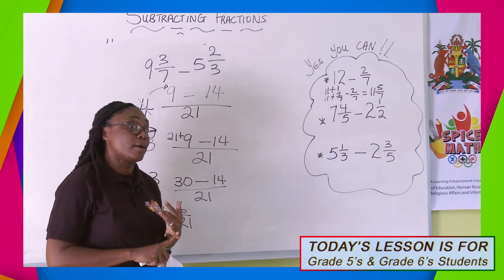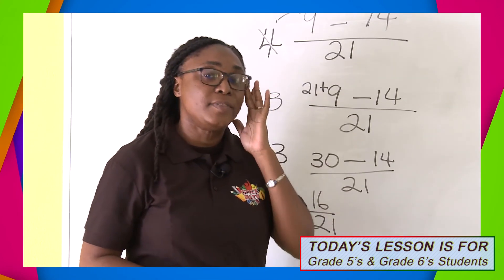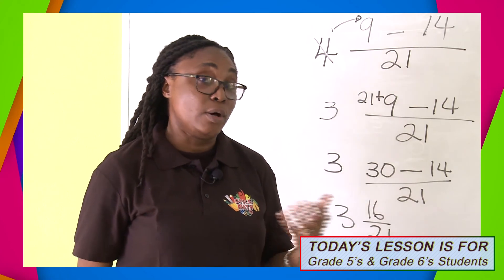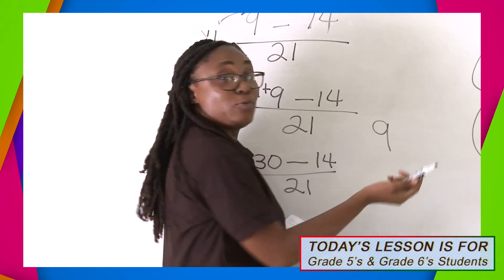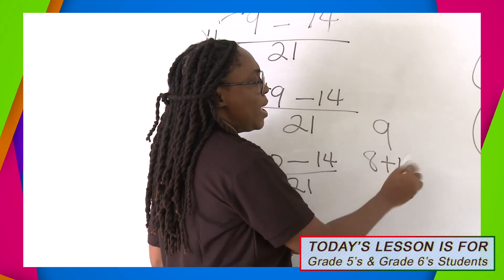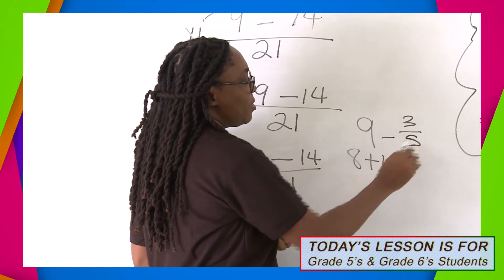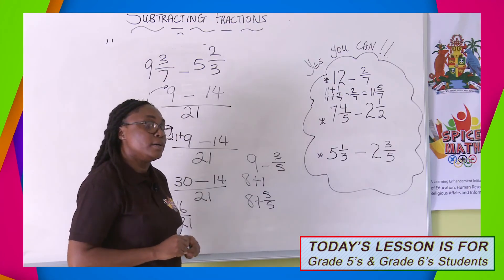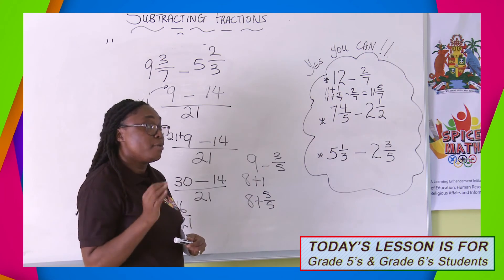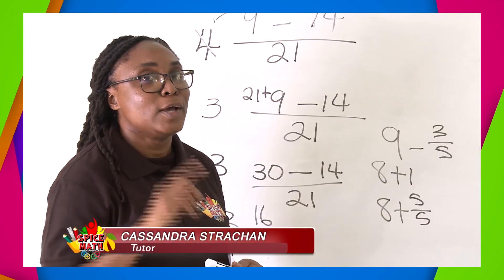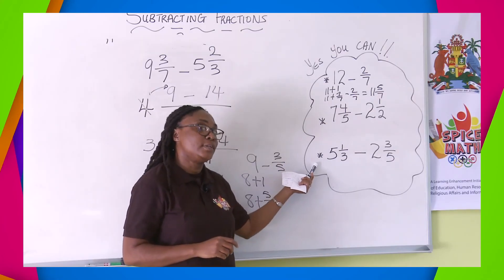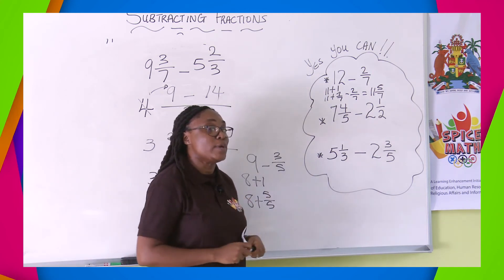Remember, when subtracting proper fractions, always look at the denominators — the numerators are subtracted and we may need to work with the denominators. If it's a whole number minus a proper fraction, remember: 9 becomes 8 plus 1, and if the fraction is 3 over 5, that's 8 plus 5 over 5. Take your time — correct answers come from being confident, concentrating, and working on your concepts. Keep working on your fractions. Check these two questions and be ready to give me the answer next class.